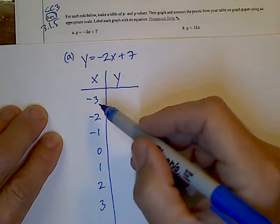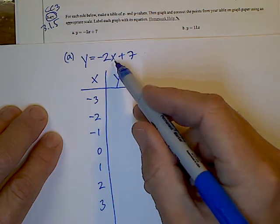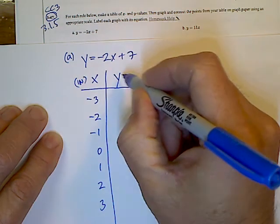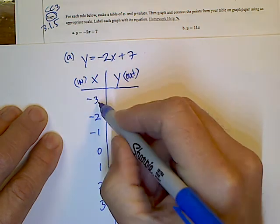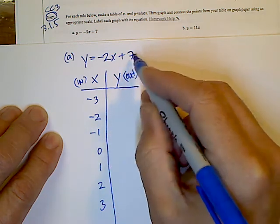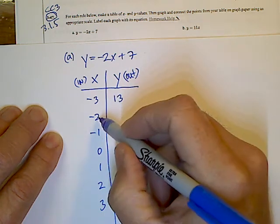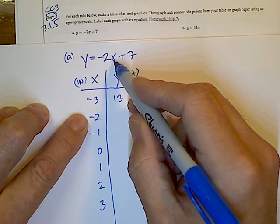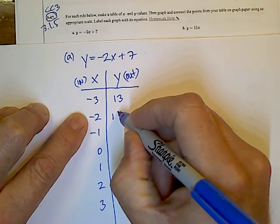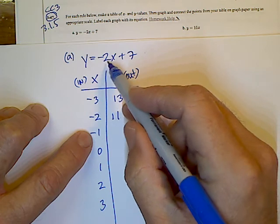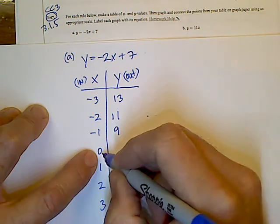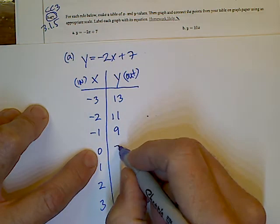So we'll start with that. We put a negative 3 in to the x and do the math. This is the input, and this is the output. So in goes the x, so negative 2 times negative 3 is positive 6, and then add 7, so I get 13. Putting in the negative 2 into the x, negative 2 times negative 2 is positive 4 plus 7 is 11. Putting in negative 1, negative 2 times negative 1 is positive 2, plus 7 is 9. Putting in 0, I end up with plus 7, so it's 7.